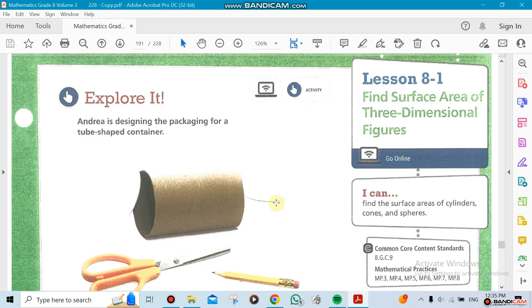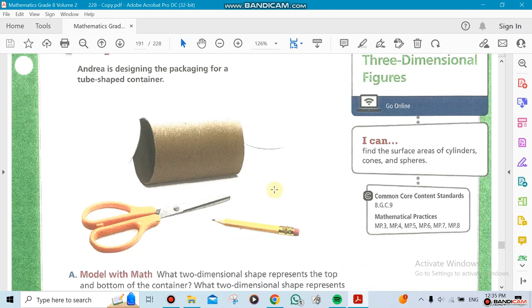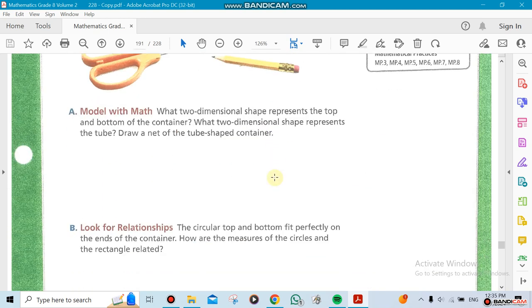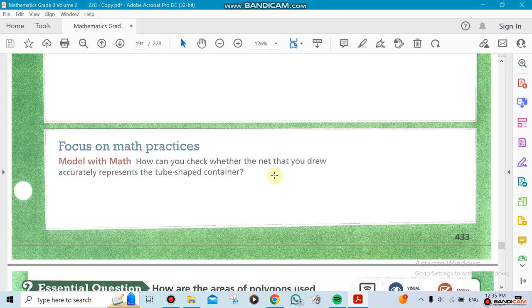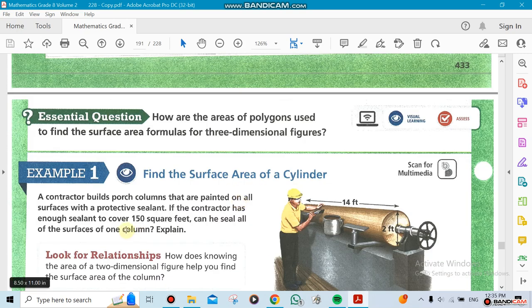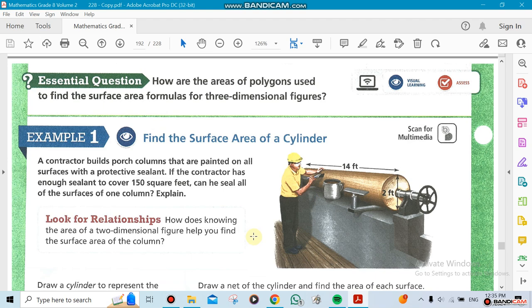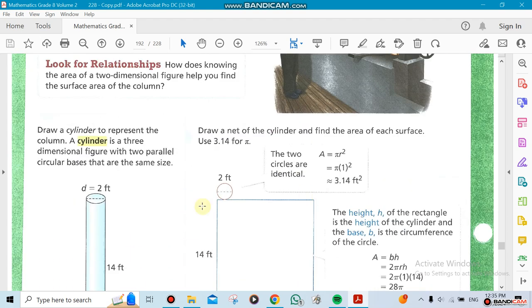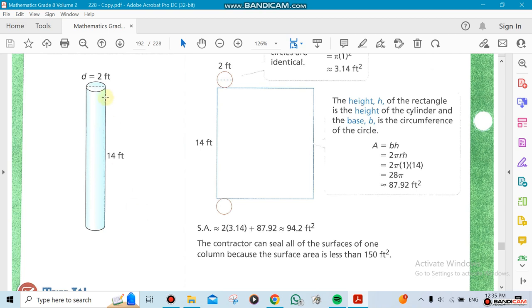Point one: finding the surface area of three-dimensional figures. In this section we're going to be talking about three figures. We're going to be talking about the surface area of a cylinder. This is the shape of a cylinder. I'll show you another one here, this is more clear.